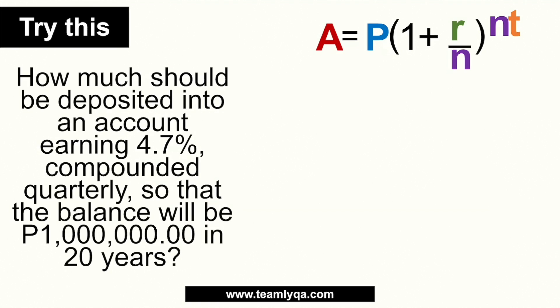Question number two says: how much should be deposited into an account earning 4.7% compounded quarterly so that the balance will be 1 million pesos in 20 years? So let's solve this. This time, what's missing is the initial deposit — that's our principal. The 1 million is what you want it to become after 20 years, so that's the accrued total, A.